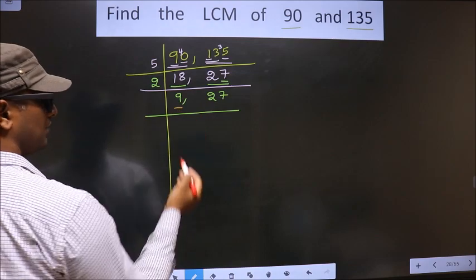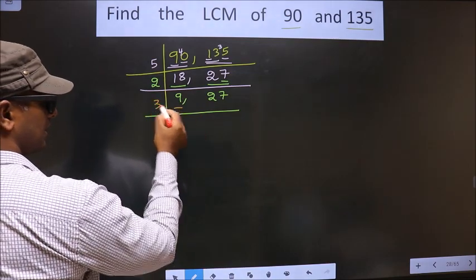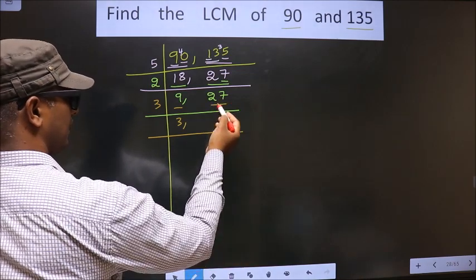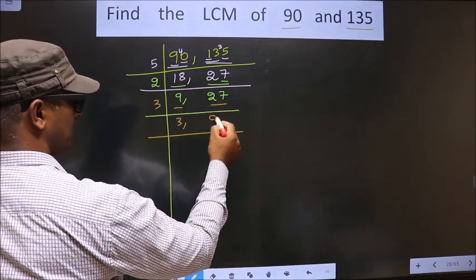Now here we have 9. 9 is nothing but 3 threes. The other number is 27. When do we get 27 in the 3 table? 3 nines, 27.